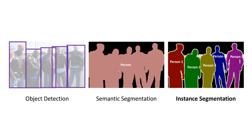To take it to the next level, once you do semantic segmentation, if you can also separate each individual — person 1, person 2, 3, 4, 5 — then this is called instance segmentation, which is an extension of semantic segmentation. This is the task we are trying to achieve with U-Net.